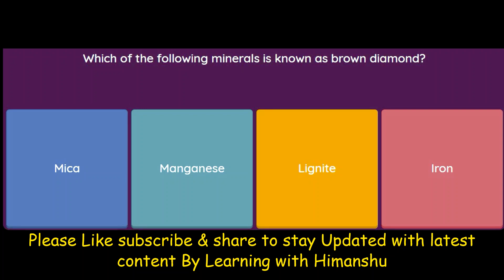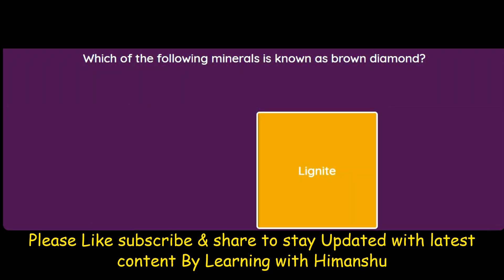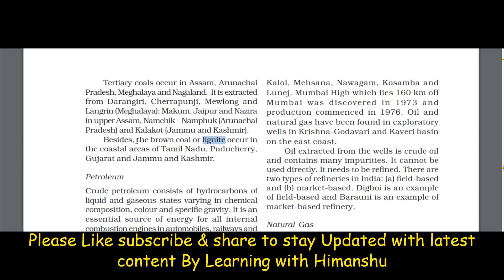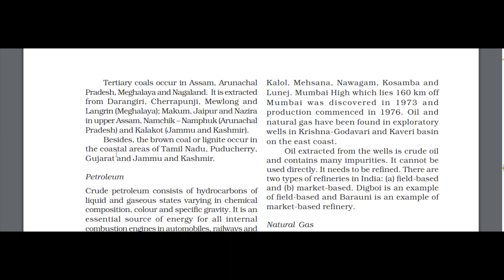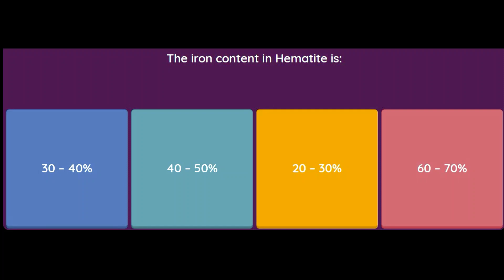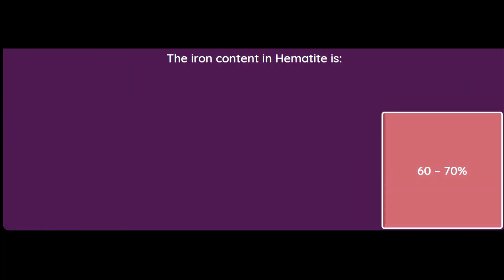Which of the following minerals is also known as 'brown diamond' — mica, manganese, lignite, or iron? The answer is lignite, which is actually brown coal. From the book, brown coal, called lignite, occurs in coastal areas of Tamil Nadu, Pondicherry, Gujarat, and Jammu & Kashmir. Next: the iron content in hematite is 30–40%, 40–50%, 20–30%, or 60–70%? The answer is 60 to 70 percent.